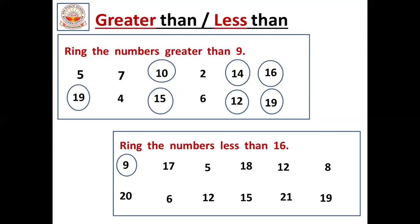Now 5. Is 5 a big number or small number compared to 16? It is a small number — 5 is less than 16, so we should circle it. Now 18. Is 18 a big number or small number compared to 16? It is a big number, so we should not circle it.